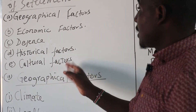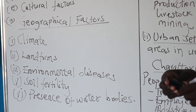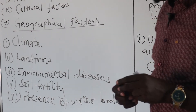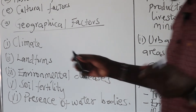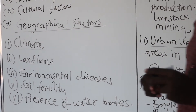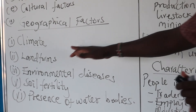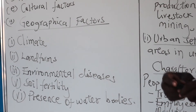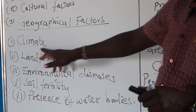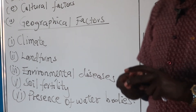Cultural factors is also another key point. Let us begin to talk about geographical factors. We have various aspects of geographical factors that influence settlements. Number one is climate — the recorded weather of a particular place over a long period of time. When we talk about climate, it has to do with rainfall reliability and temperature of a particular place. Areas which receive adequate rainfall will always attract large settlements, because rainfall will influence activities such as farming.